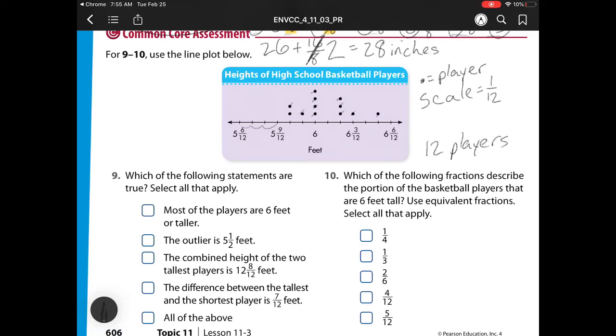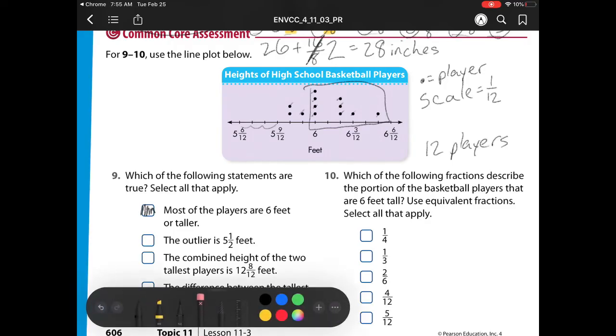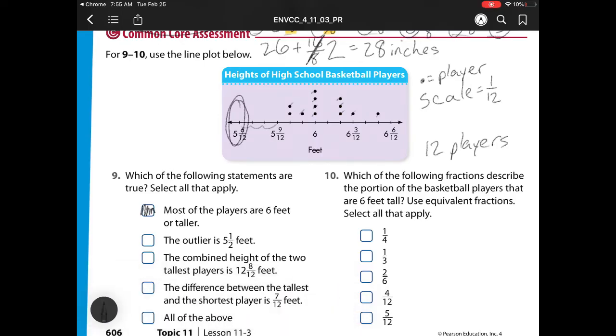And let's check this first statement. Most of the players are 6 feet or taller. So I'm looking at this group. And yeah, that does seem like most of our players fit that. Our outlier now is at 3 1/2. So let's check where our outlier is. I'm sorry, not 3 1/2. Our outlier is at 5 1/2. We don't have any dots at 5 1/2, so we're going to leave that one alone. Our next one says the combined height of the two tallest players is 12 and 8 twelfths. So here is one tallest player and two tallest players. So I have 6 and 3 twelfths plus 3 twelfths to 4 twelfths to 5 twelfths. Plus 6 and 5 twelfths. So my answer is 12 and 8 twelfths. Which, yes, it does match what they have.